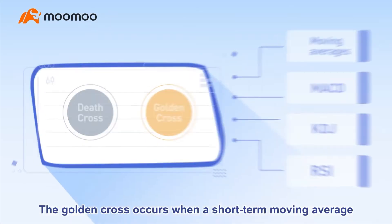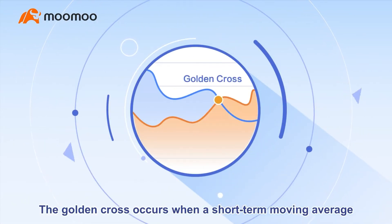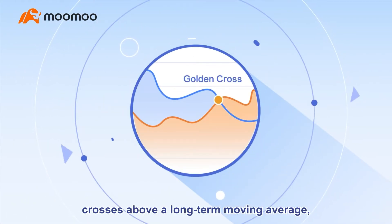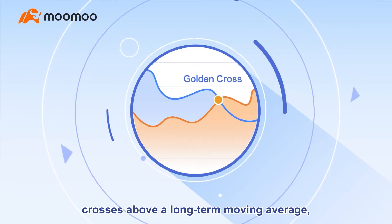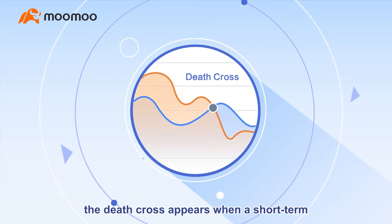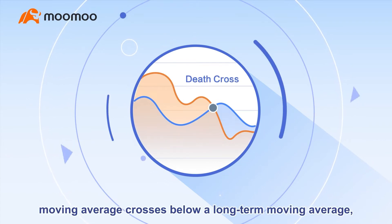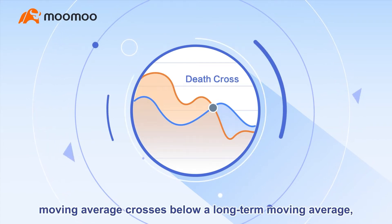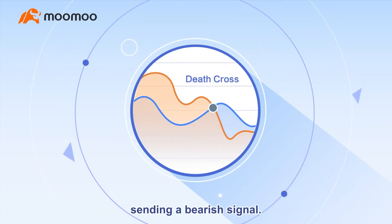The golden cross occurs when a short-term moving average crosses above a long-term moving average, indicating a potential rally. Conversely, the death cross appears when a short-term moving average crosses below a long-term moving average, sending a bearish signal.